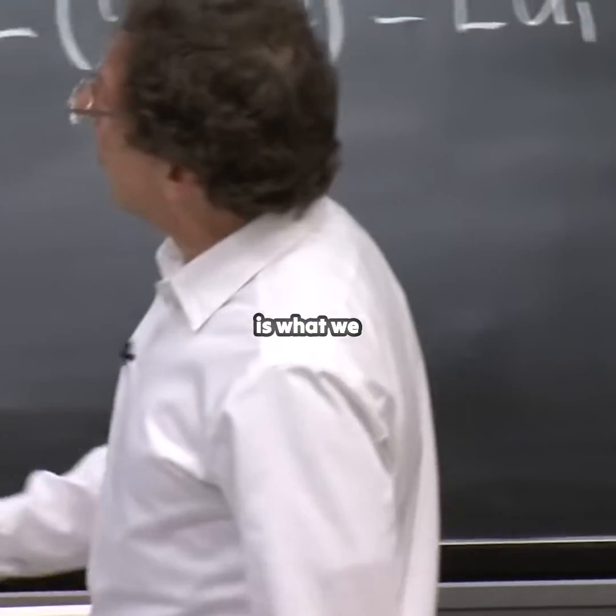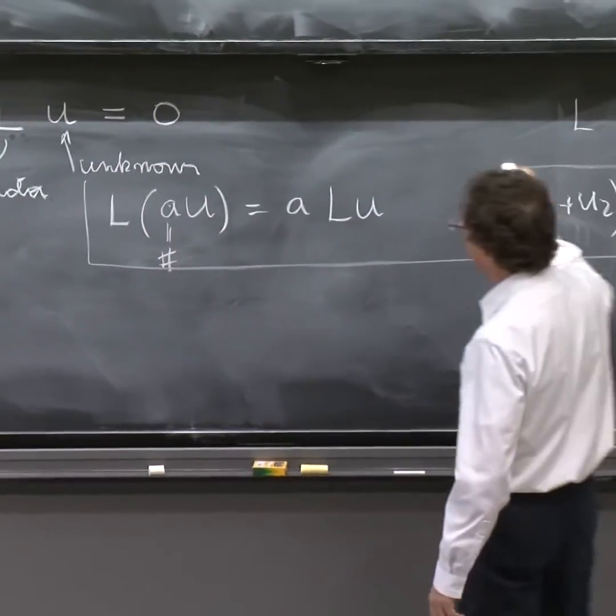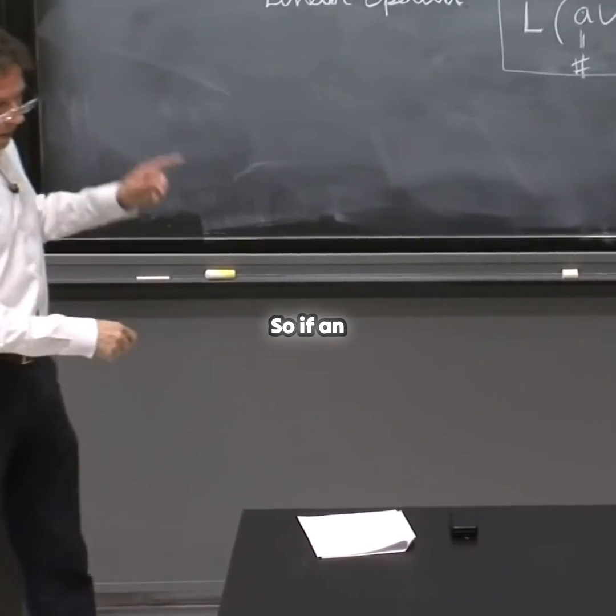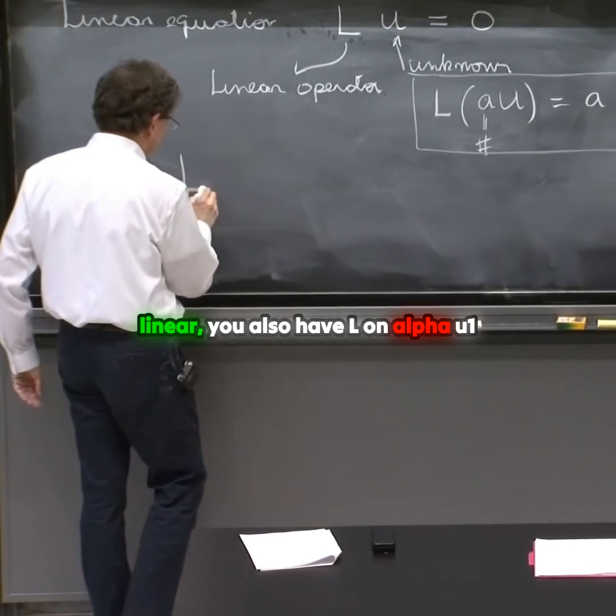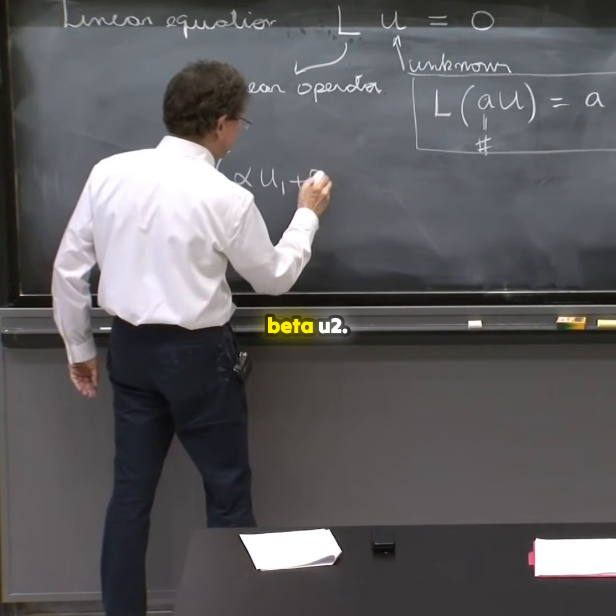This is what we mean by the operator being linear. So if an operator is linear, you also have L on alpha U1 plus beta U2.